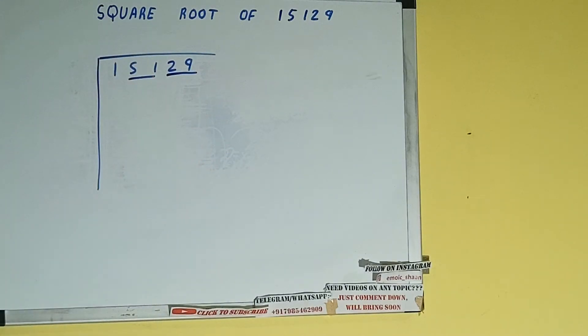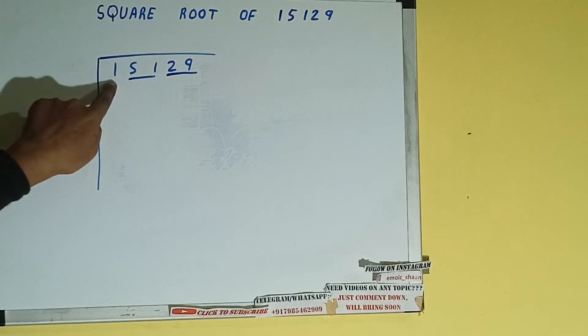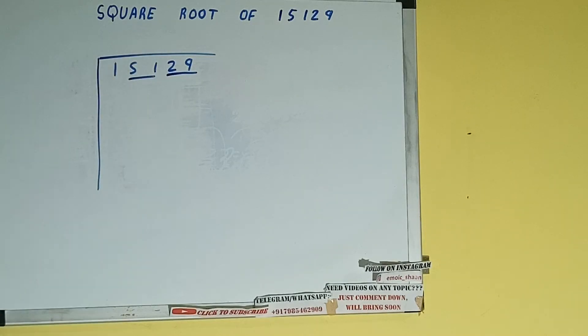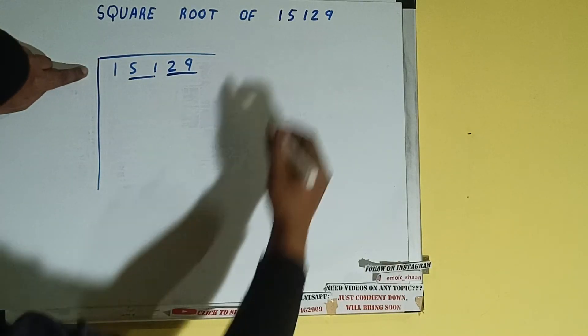First we'll divide this one and then we'll bring down the pairs. The rule is whatever number we write here, we have to write here also. So if we write 2 here and 2 here it will be 4, which is greater than 1, so we cannot take it.